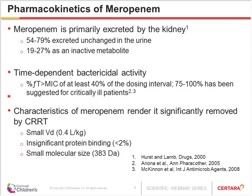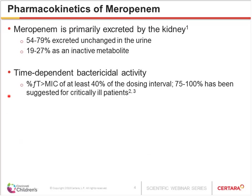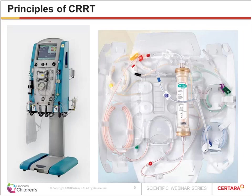The characteristics of meropenem — small volume of distribution, minimal protein binding, and very small molecular size — mean it is efficiently removed by continuous renal replacement therapy.